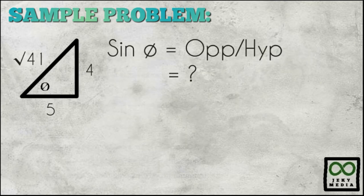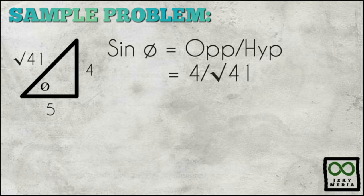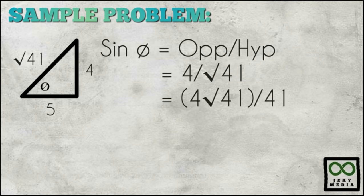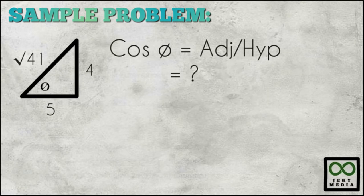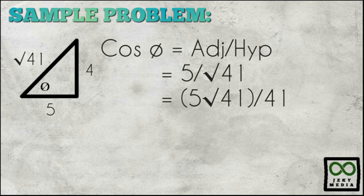Let's proceed to getting the value of sine theta — opposite over hypotenuse. The resulting ratio is 4 over the square root of 41. Rationalizing the denominator results in 4 square root of 41 over 41. For cosine theta — adjacent over hypotenuse — the resulting ratio is 5 over the square root of 41. Rationalizing the denominator results in 5 square root of 41 over 41.